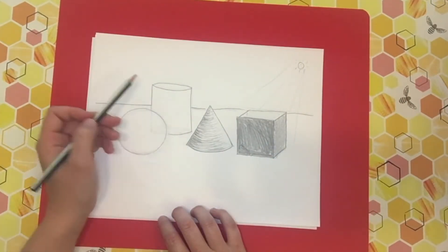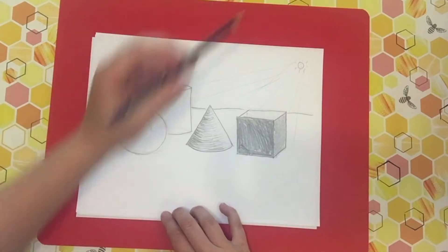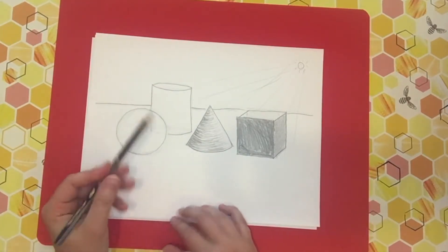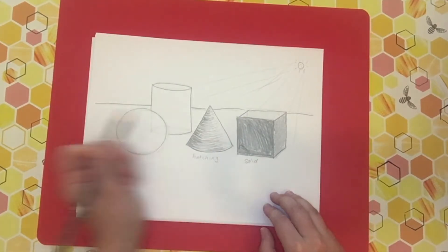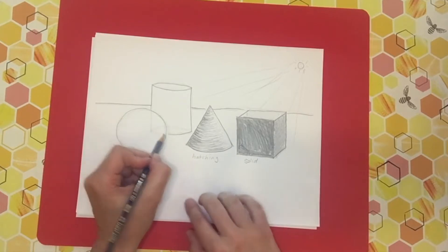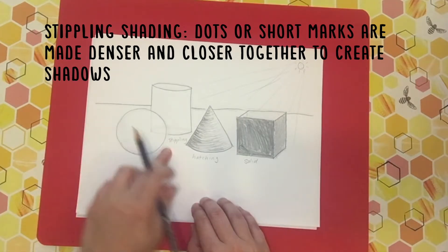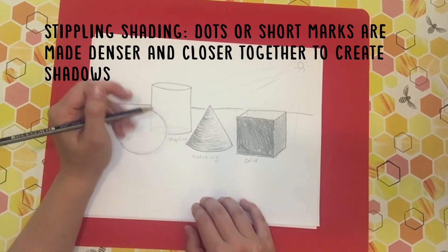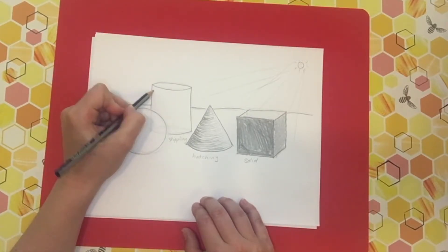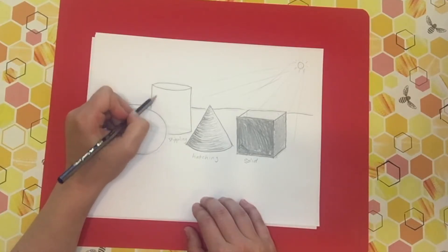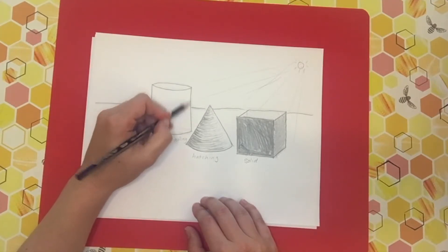So now we can do something different with our cylinder. Let's think about how the light would hit the cylinder. This was hatching, this was solid shading, and on this we're going to use something called stippling. And stippling uses dots, and I'm going to have to speed this up because it is a little more time consuming. I'm going to create many, many more dots closer together where there's a shadow, and I'm going to have fewer smaller dots that are further apart where it's brightest.